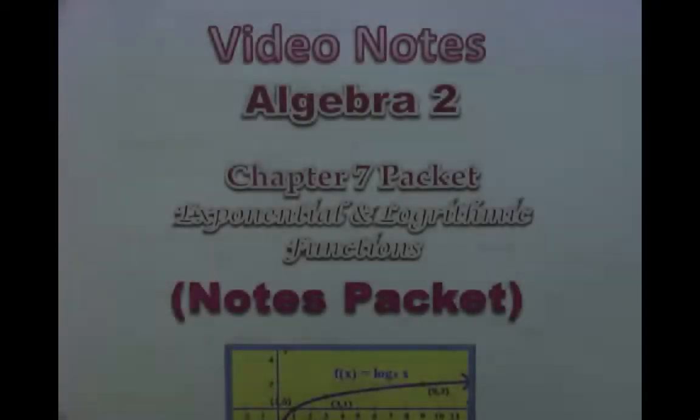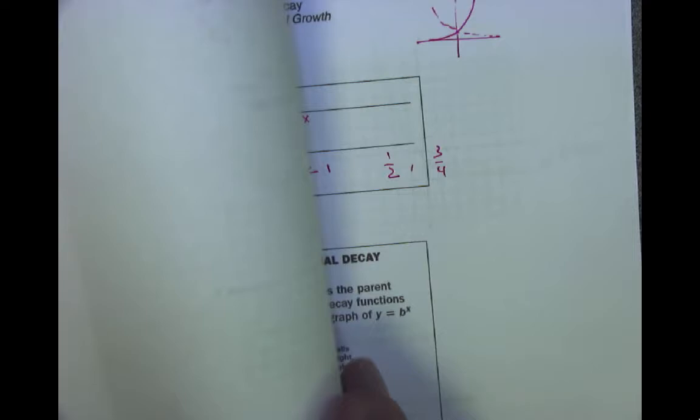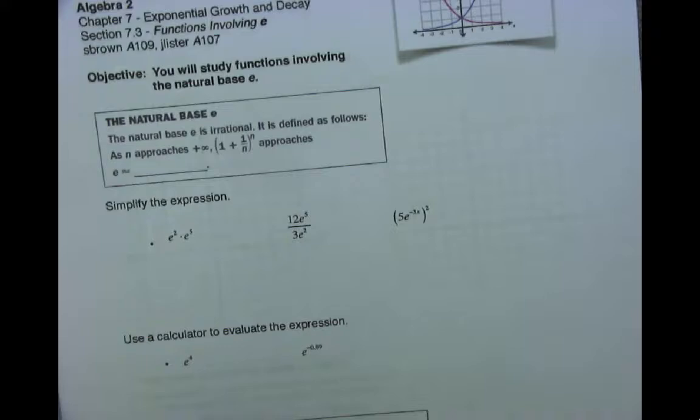Welcome back. This is Mr. Lister, and we are now in the third section of Chapter 7. We've looked at exponential growth functions and decay functions, and they're pretty easy to graph. Now we get into something called natural base E.